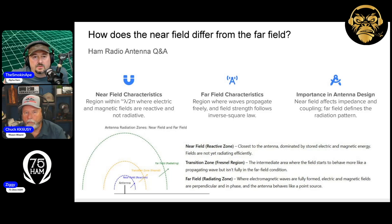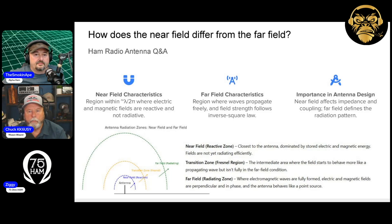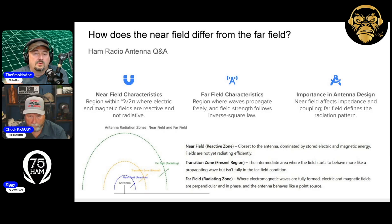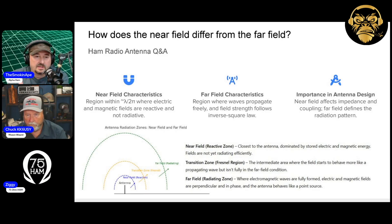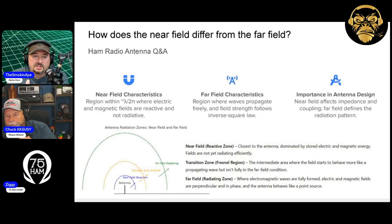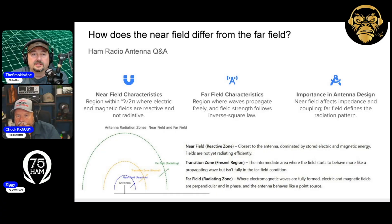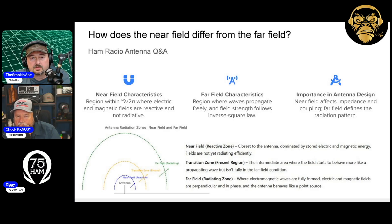A lot of people ask: what is the near field and how is it different from the far field? The near field region is generally around a quarter wave of the frequency you're operating on to a full wave. It can vary a little bit depending upon the antenna and the frequency you're operating on.